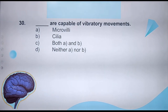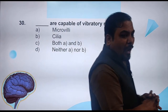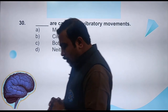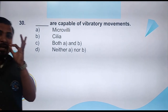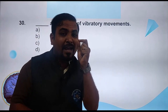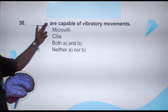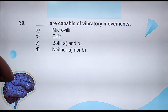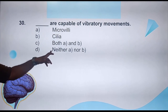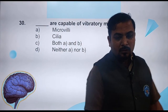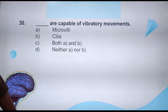Question 30: What are capable of vibratory movements? Who can perform vibratory movements? Options — microvilli, cilia, both A and B, or neither. Look at how many questions have been made just on cilia! All students' answers are now coming on track and are correct.